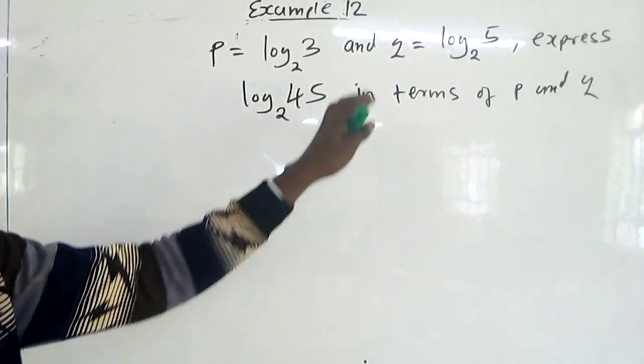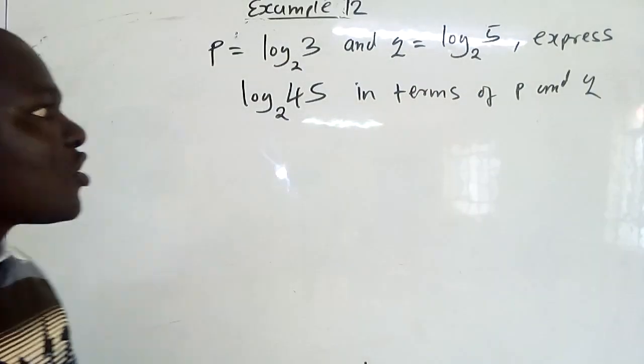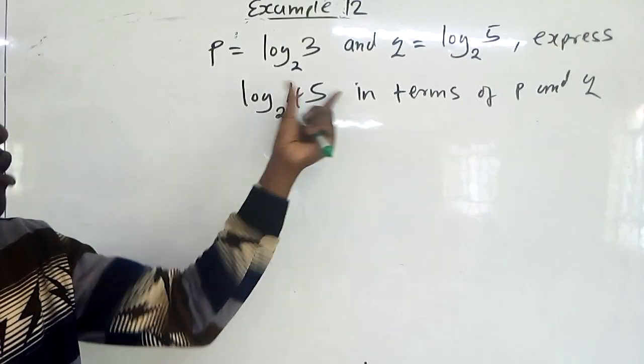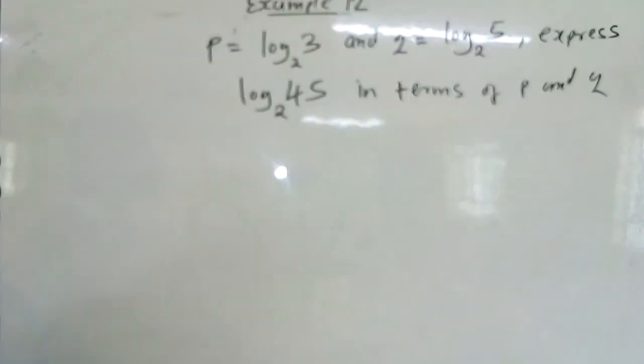Given that P is log 3 to base 2 and Q is log 5 to base 2, express log 45 to base 2 in terms of P and Q.